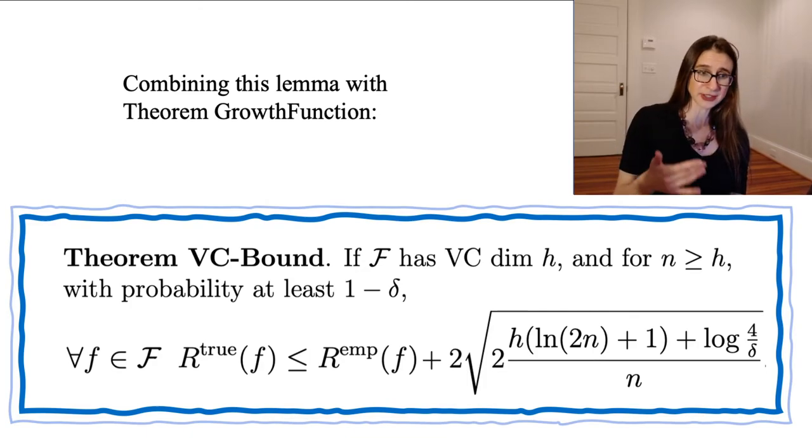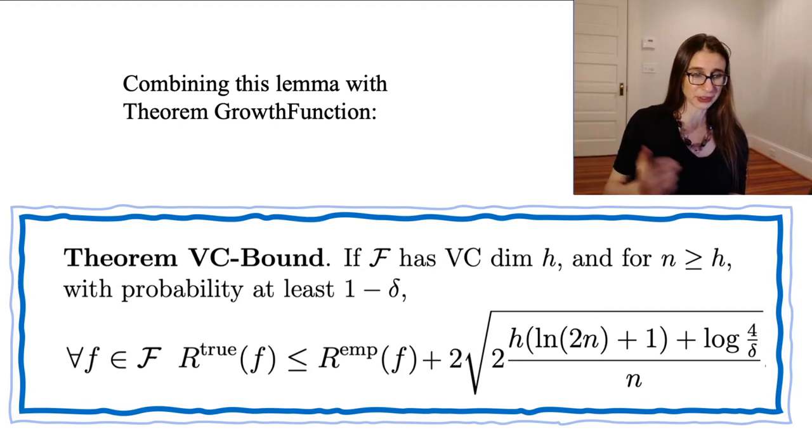So if the class of functions has VC dimension H, and n is greater than or equal to H, with probability at least one minus delta, so with high probability, for all functions in the class, the true risk is less than or equal to the empirical risk plus some stuff, stuff depends on the VC dimension.